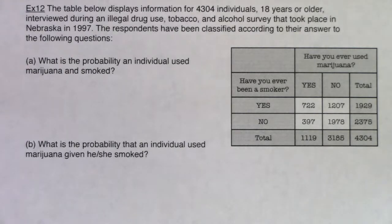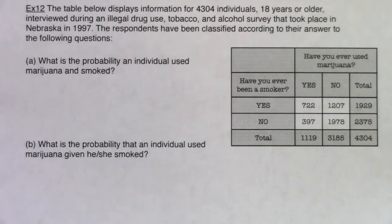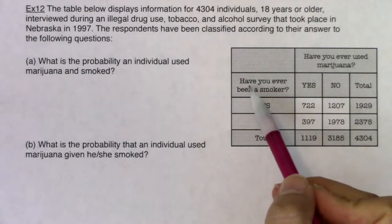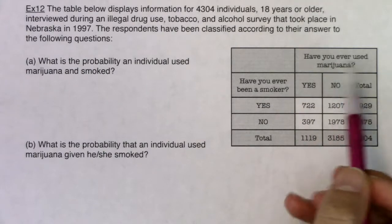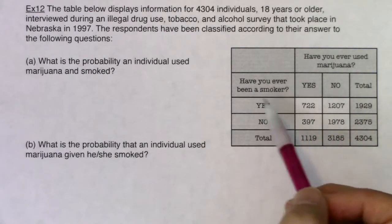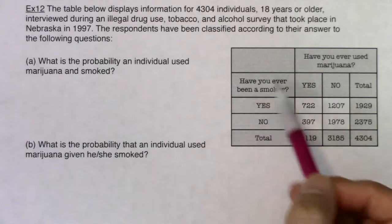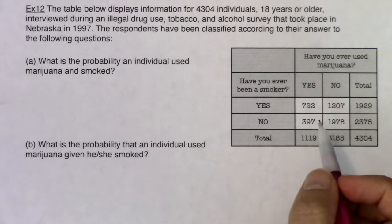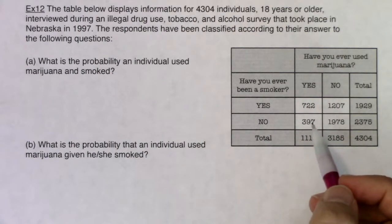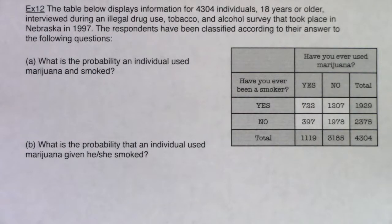Example 12. The table below displays information on 4,300 individuals, 18 years or older, interviewed during an illegal drug use, tobacco, and alcohol survey that took place in Nebraska in 1997. The respondents have been classified according to their answers to two questions: Have you ever been a smoker — meaning cigarettes — and have you ever used marijuana? Those are two categorical variables; people would answer yes or no.